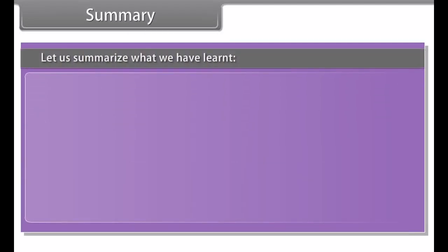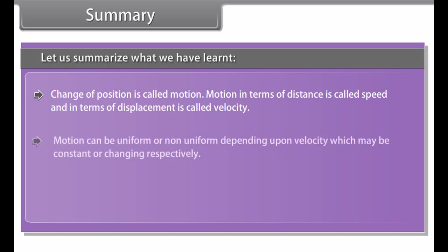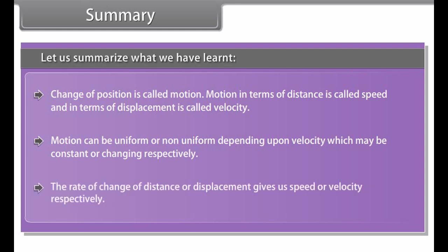Summary: Change of position is called motion. Motion in terms of distance is called speed, and in terms of displacement is called velocity. Motion can be uniform or non-uniform depending upon velocity, which may be constant or changing respectively. The rate of change of distance or displacement gives us speed or velocity respectively.